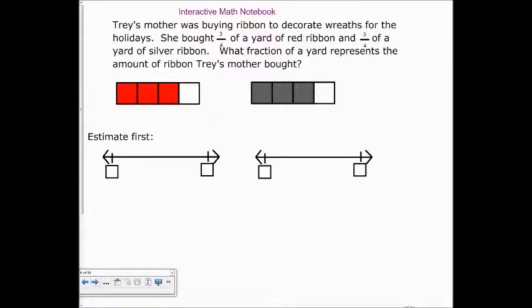So, three-fourths. The whole number in front of it, so we're going to estimate first. That's zero and one. Zero and one. So, three-fourths, where would that fall?